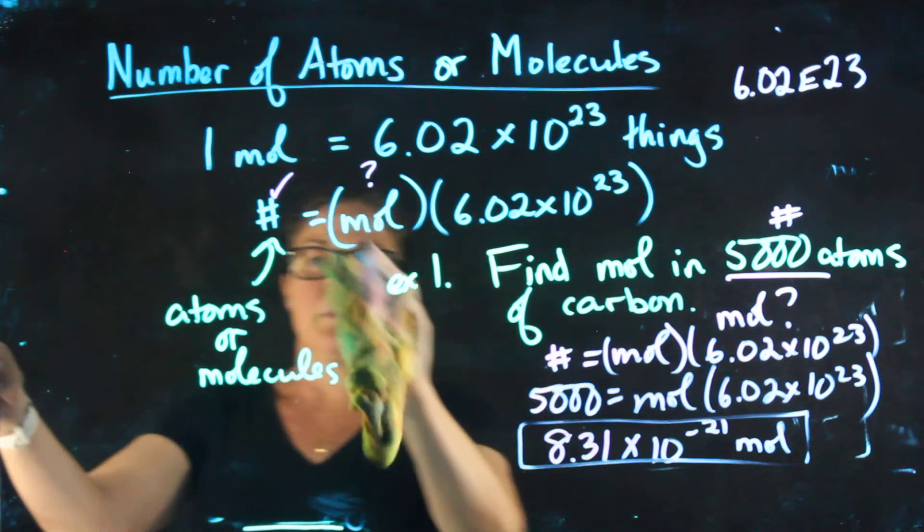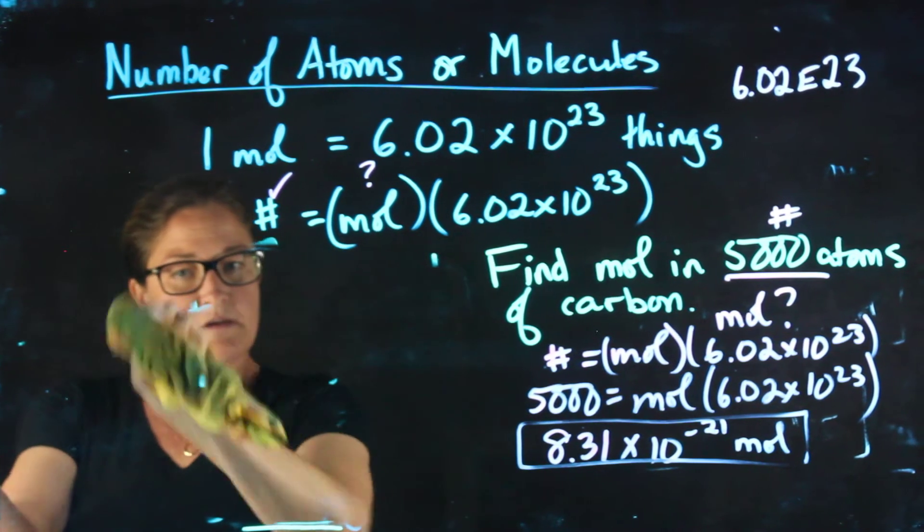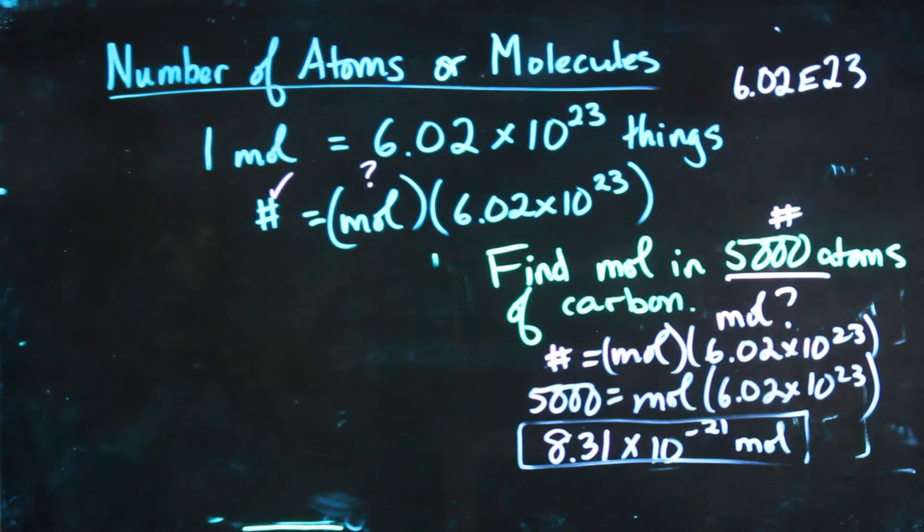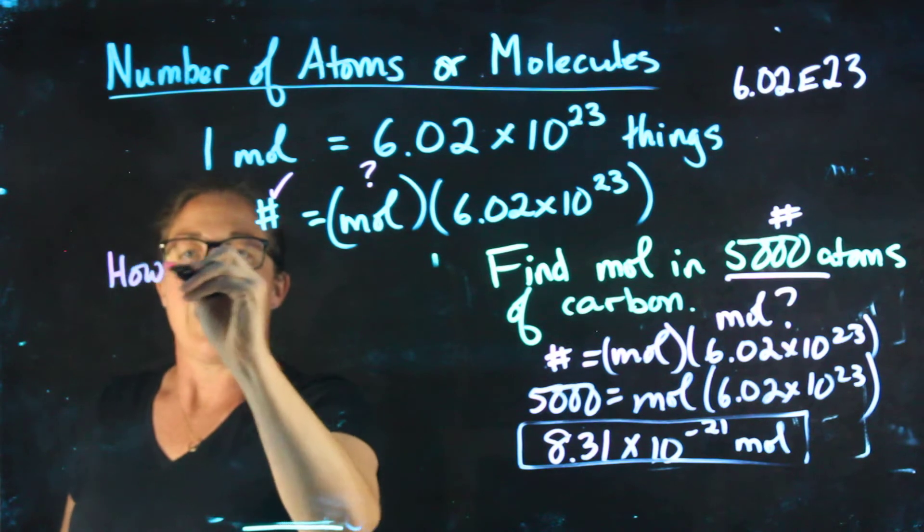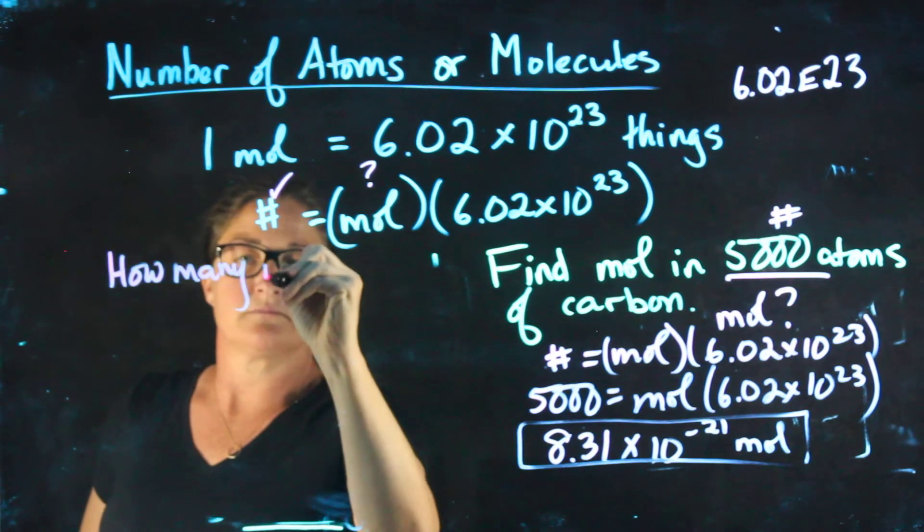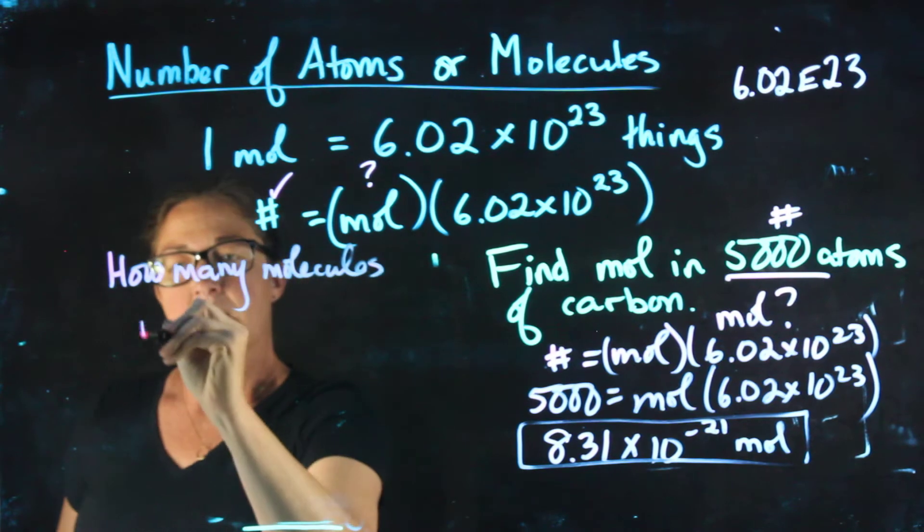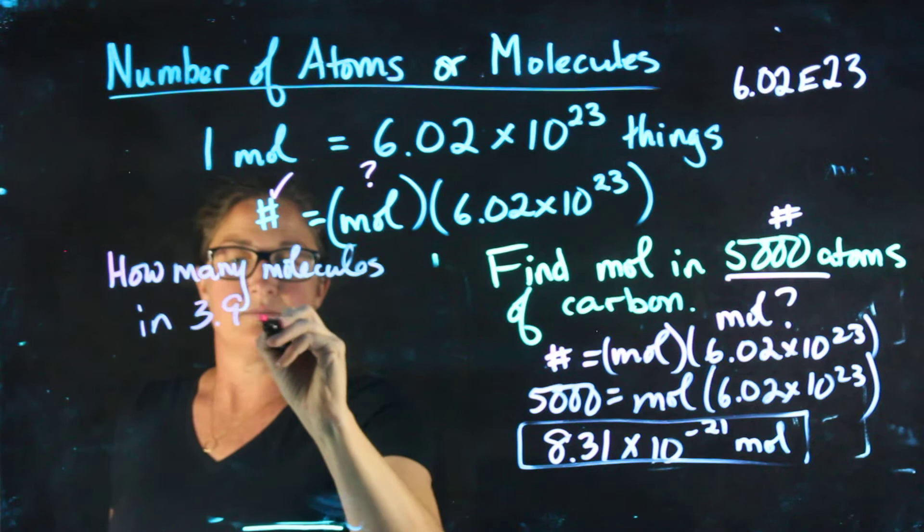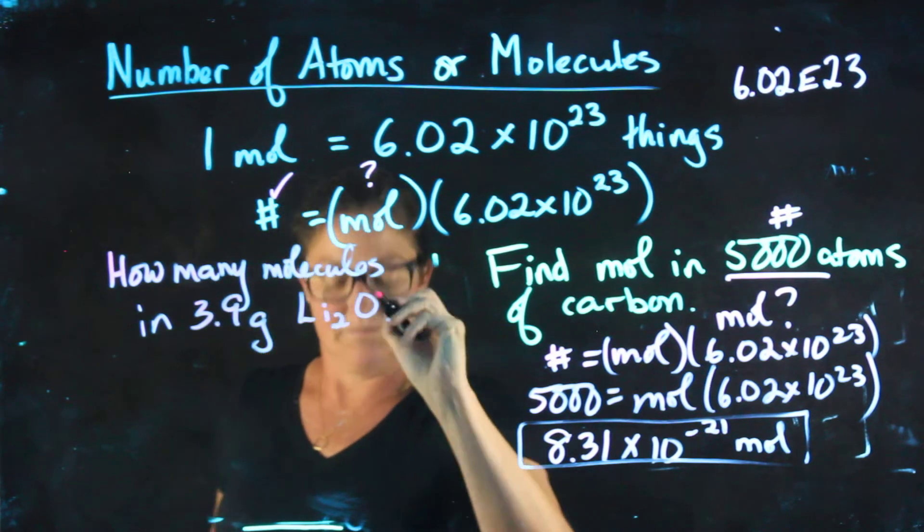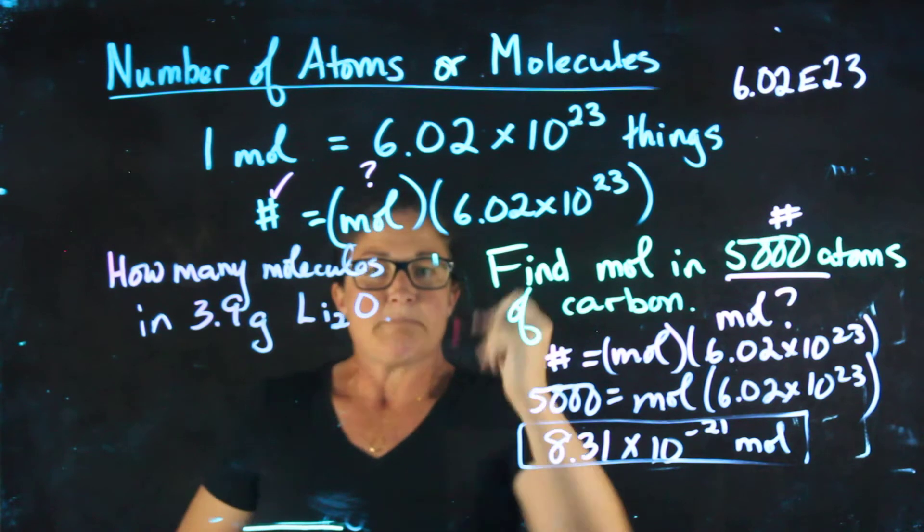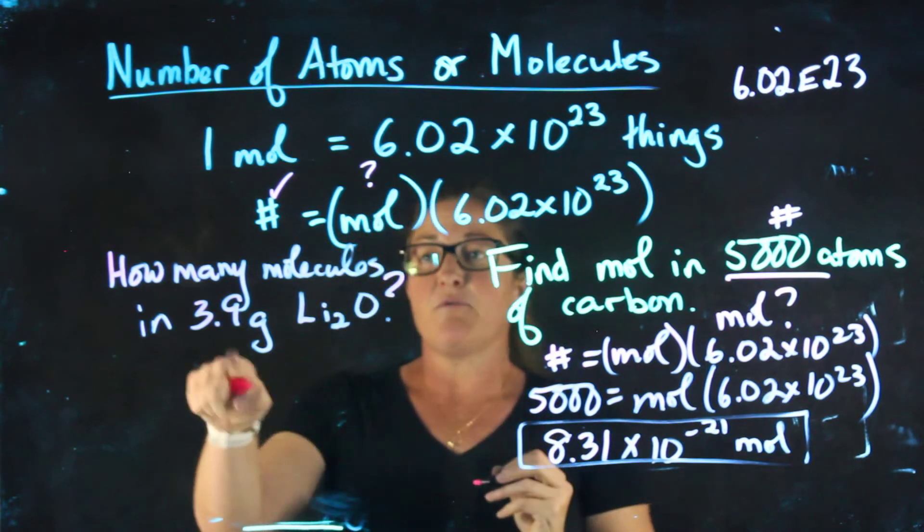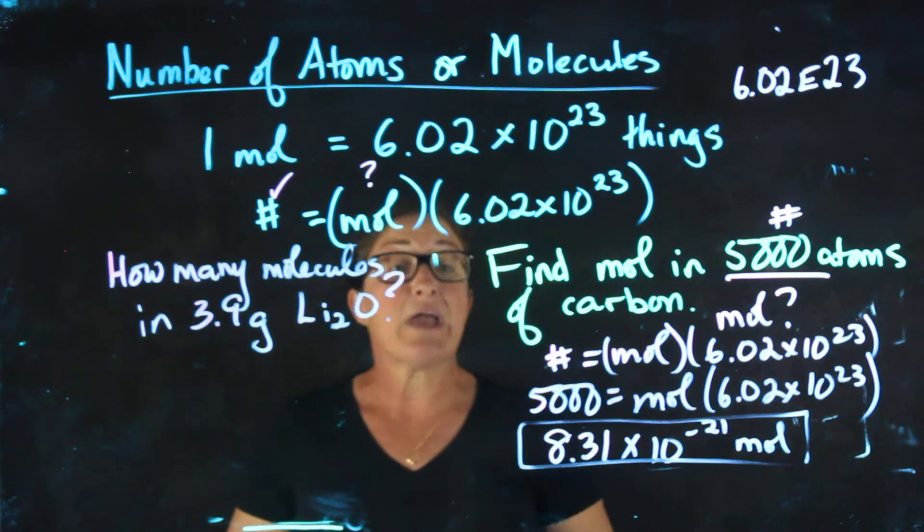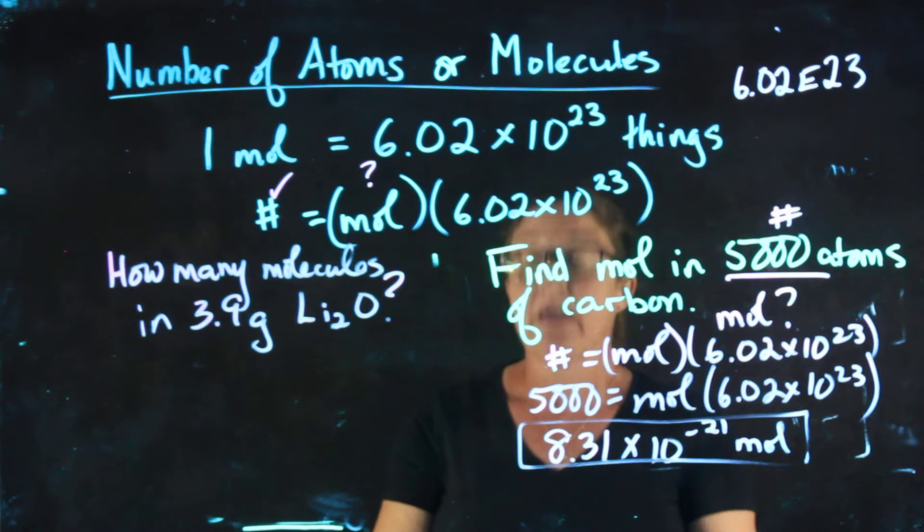So a second example might look like this. It's how many molecules in 3.9 grams of Li2O. Before I can find the number of molecules, I'm going to need to have the number of moles. I don't have the number of moles yet. Is there a way I can get it? Absolutely.